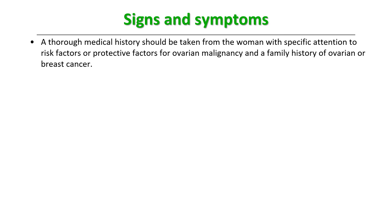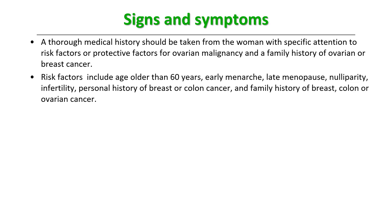Let us look into the signs and symptoms. If a patient walks into your clinic with some dull ache, bloating, change in appetite, not much in the way of menstrual problems, and she is in the 35–40 age group — what points in history-taking must you cover? You should give specific attention to risk factors or protective factors for ovarian malignancy, and a family history of ovarian or breast cancer. Risk factors include age older than 60, early menarche, and late menopause.